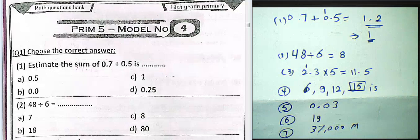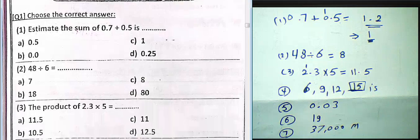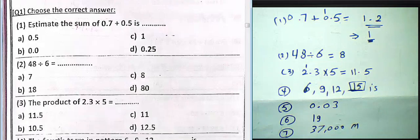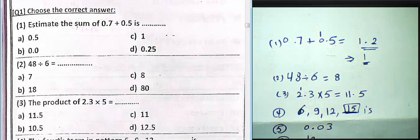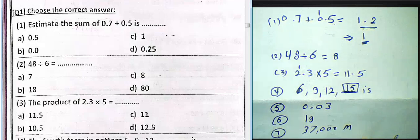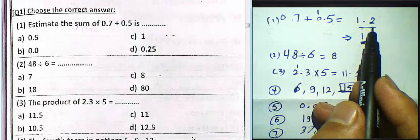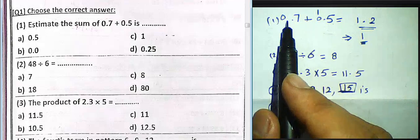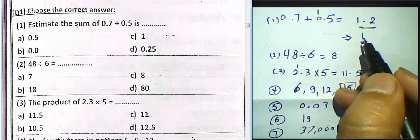Hello students. We will solve Model number 4, Question 1: estimate the sum of 0.7 plus 0.5. We can find the result by adding 7 plus 5 equals 12, write 2 and carry 1. Then 1 plus 0 equals 1, so the result is 1.2.